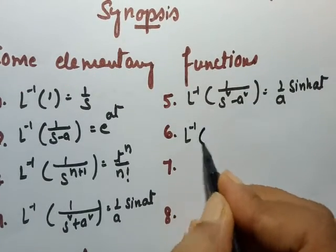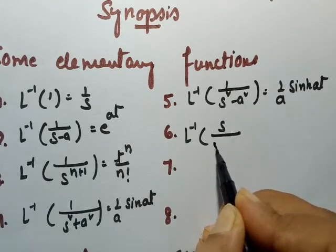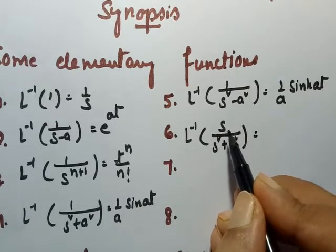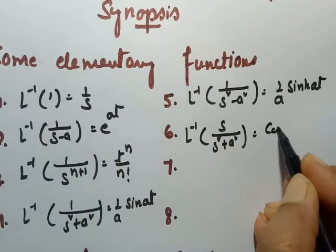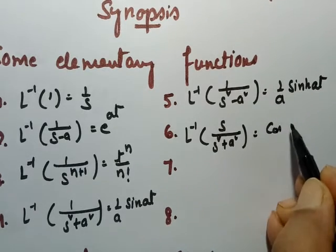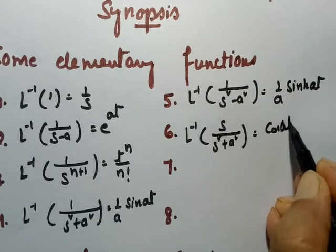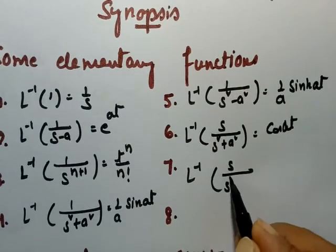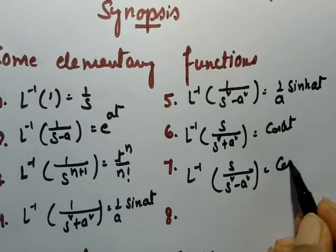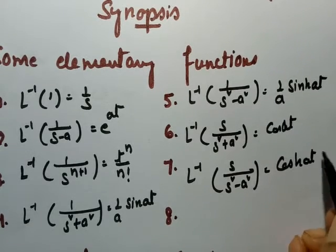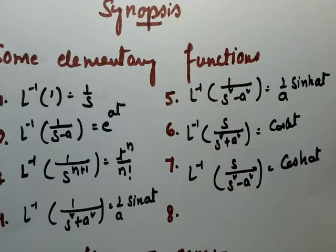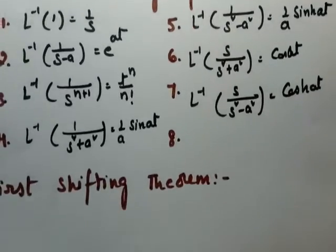Inverse Laplace transform of s/(s² + a²): if s is in the numerator it will be cosine. If it is plus, it is trigonometric functions — that is cos(at). Inverse Laplace transform of s/(s² - a²) is equal to cosh(at). These are all the elementary functions and before going to the examinations you have to make a note of them.